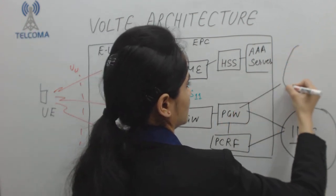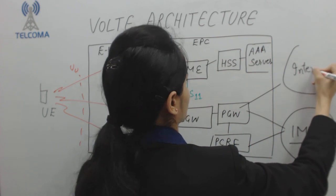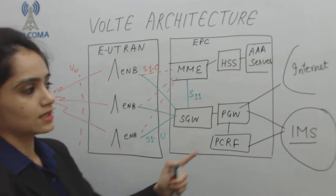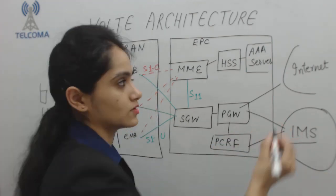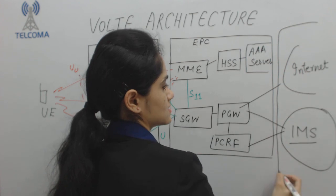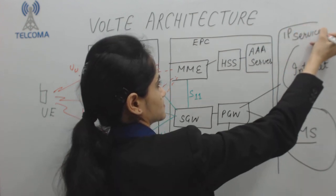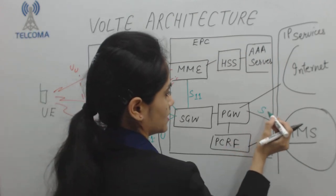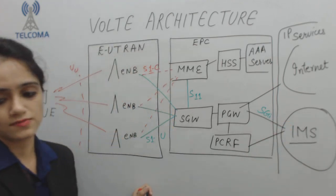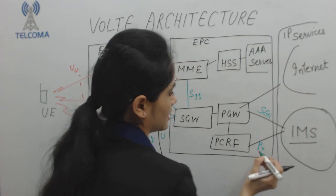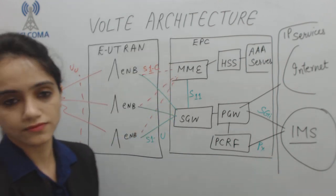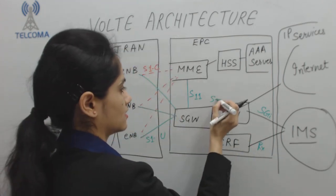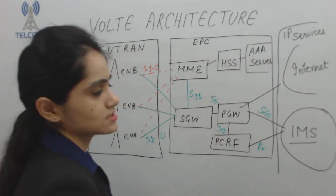The PDN Gateway is also connected to the Internet. The SGI interface is defined between the PGW and the IMS/Internet, the Gx interface connects the PGW to the PCRF, and the Rx interface is used with the PCRF. Additionally, the S5 and S7 interfaces are defined between the SGW and PGW.